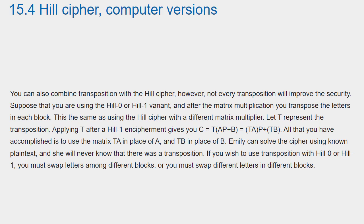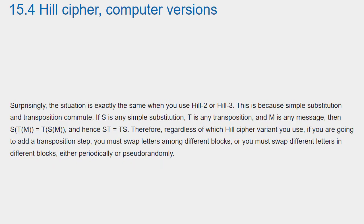If you wish to use transposition with Hill 0 or Hill 1, you must swap letters among different blocks or you must swap different letters in different blocks. Surprisingly, the situation is exactly the same when you use Hill 2 or Hill 3. This is because simple substitution and transposition commute. If S is any simple substitution, T is any transposition, and M is any message, then S[T[M]] = T[S[M]], and hence ST = TS. Therefore, regardless of which Hill cipher variant you use, if you are going to add a transposition step, you must swap letters among different blocks or you must swap different letters in different blocks, either periodically or pseudo-randomly.